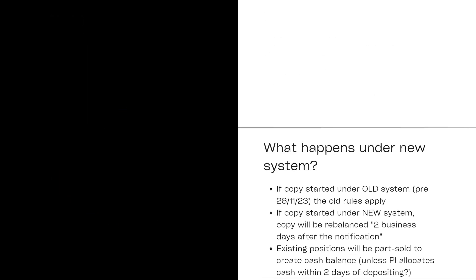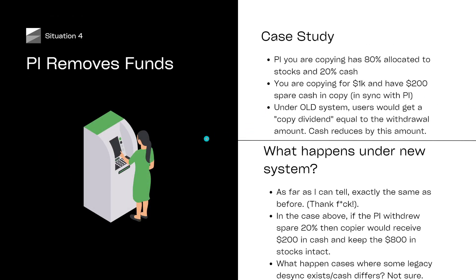You'll be relieved to know the fourth scenario is a lot simpler — this is the PI taking money out of their account. Let's imagine you're copying someone who has 80% allocated to stocks and 20% cash. You're copying for $1K, so you've got $200 cash, everything's in sync. Under the old system, if the PI took out their 20% cash, you'd simply get your $200 back from the copy into your available balance and everything would still be in sync. This doesn't cause a desync because for the PI to take out cash, they actually have to have cash.